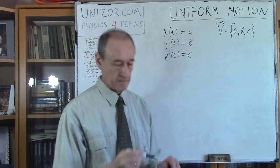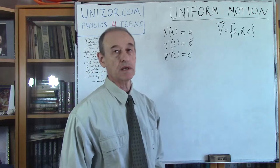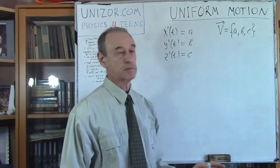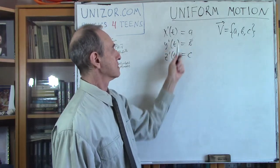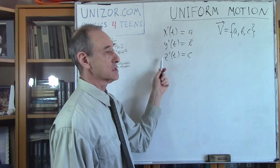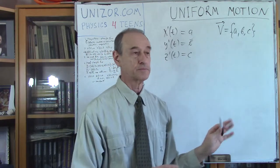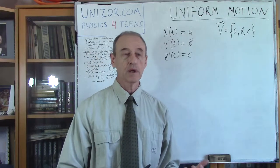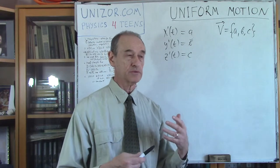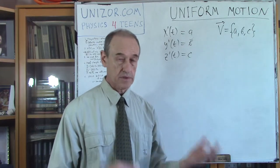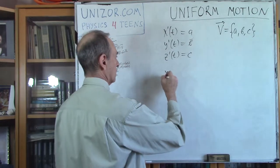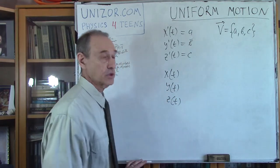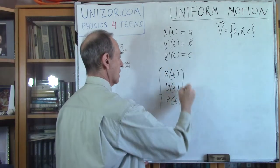We are talking about motion with a constant vector of velocity. The velocity vector has components a, b, and c, and this vector is supposed to be constant and independent of time. These components are the derivatives of the x, y, and z coordinates with respect to time. That is the definition. From this definition I would like to derive the law of motion — the position of the object as a function of time.